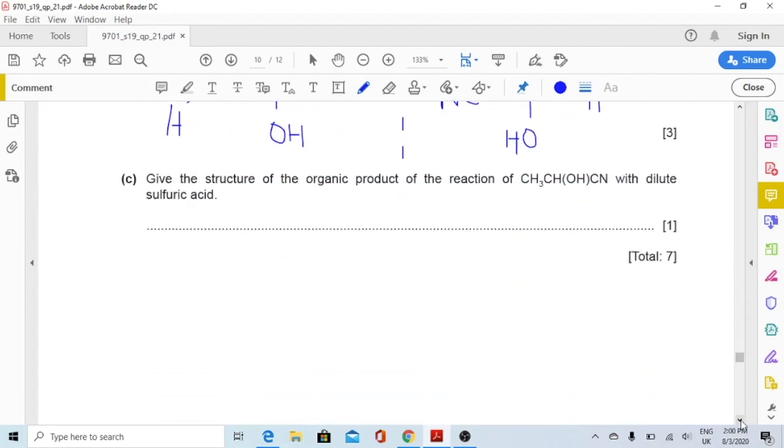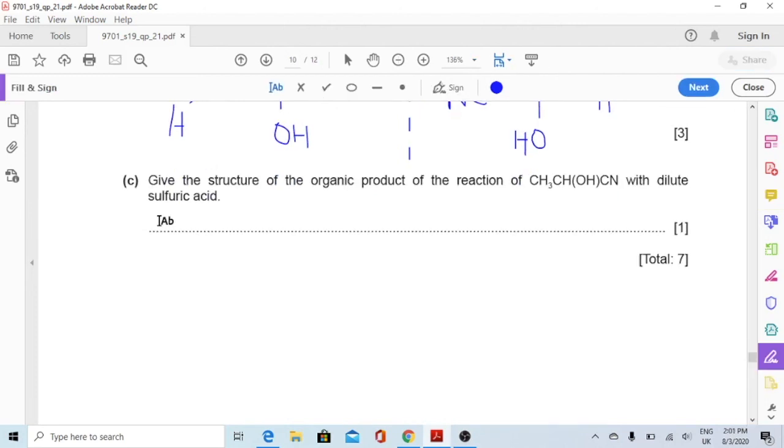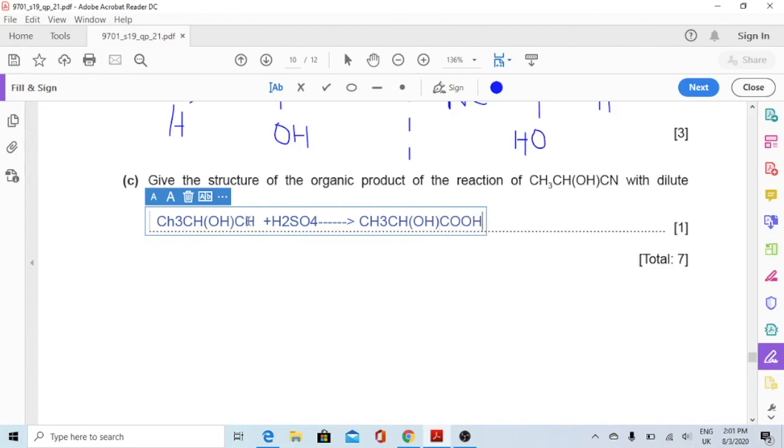Now part C, give the structure of the organic product of the reaction of CH3CHOHCN with dilute sulfuric acid. When you react CH3CHOHCN with sulfuric acid, this would give you CH3, this OH will remain the same, but this CN will turn into COOH. This will give you an organic acid. So this is one of those few reactions which you have to learn: when you react cyanides with dilute sulfuric acid, you get carboxylic acids.